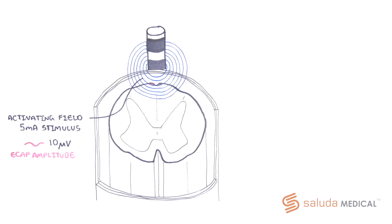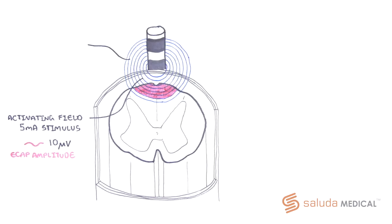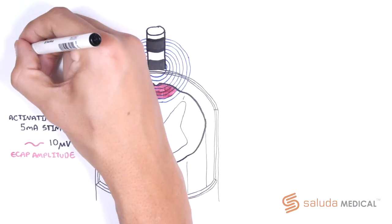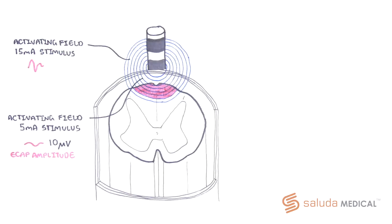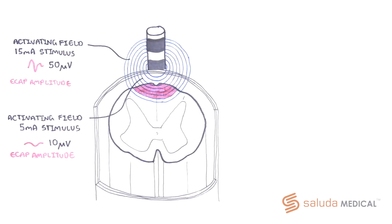In the same patient and situation, a stronger stimulus of say 15 mA will activate more dorsal column fibers and therefore elicit a larger ECAP, 50 µV in this example. At the end of the How Spinal Cord Stimulation Works video, we concluded that a certain volume of dorsal column fibers need to be activated in order to create the desired analgesic effect.